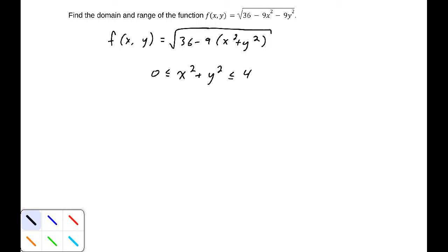That means our domain is the set of all points (x,y) such that x² + y² ≤ 4. This is the interior and boundary of a circle with radius 2.